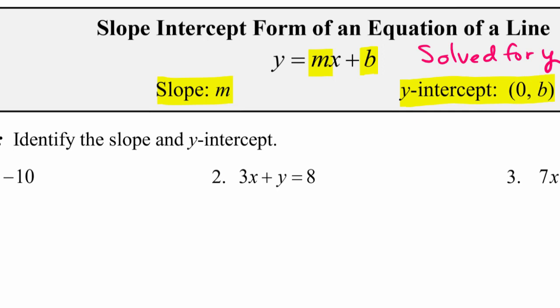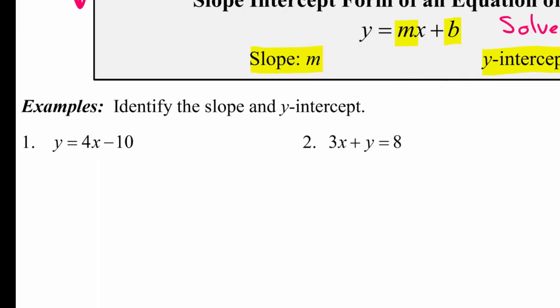Look at the example in example 1. It says identify the slope and y-intercept, and it gives us the equation y equals 4x minus 10, which is already in slope-intercept form. You can recognize that because the y is isolated on one side of the equal sign. So that means that this 4 is your slope, so m equals 4.